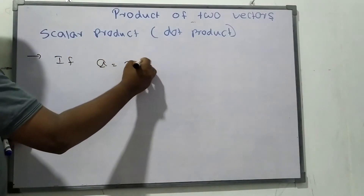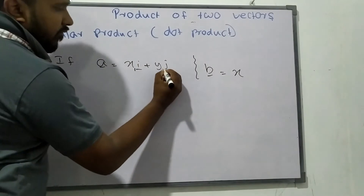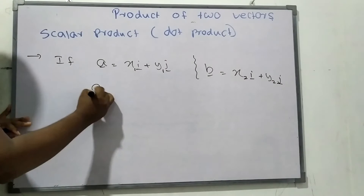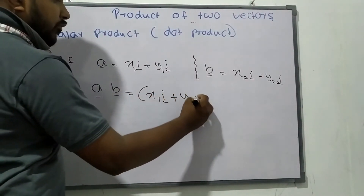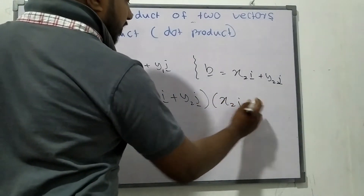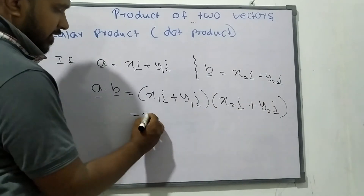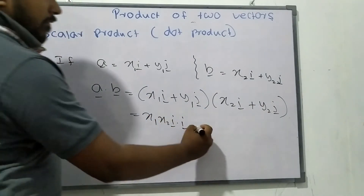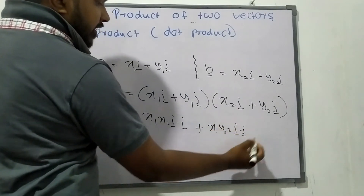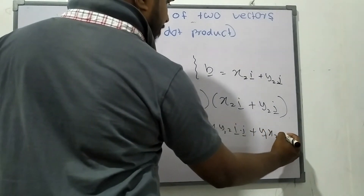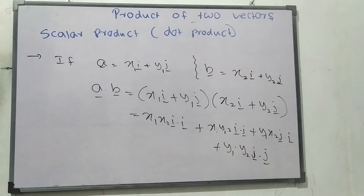If A equals x1i plus y1j and B equals x2i plus y2j, what will A dot B be? A dot B means expanding the product gives four terms: x1x2 (i dot i), x1y2 (i dot j), y1x2 (j dot i), and y1y2 (j dot j).